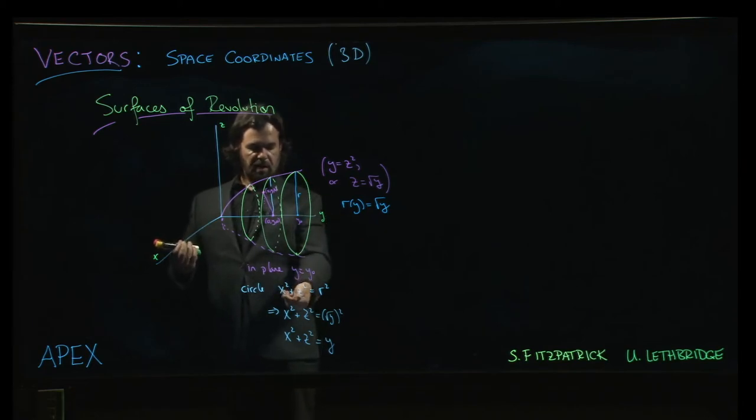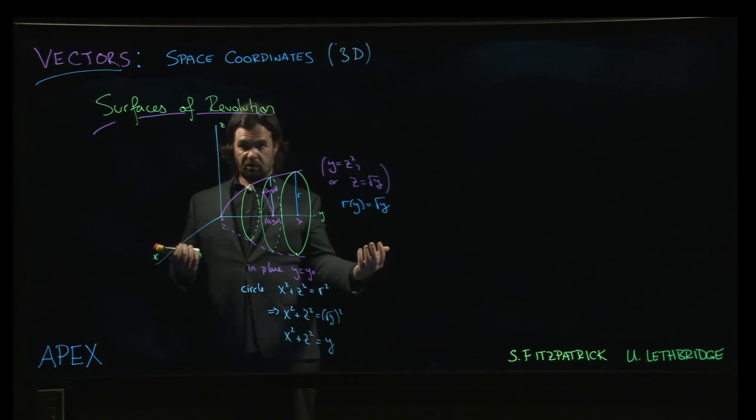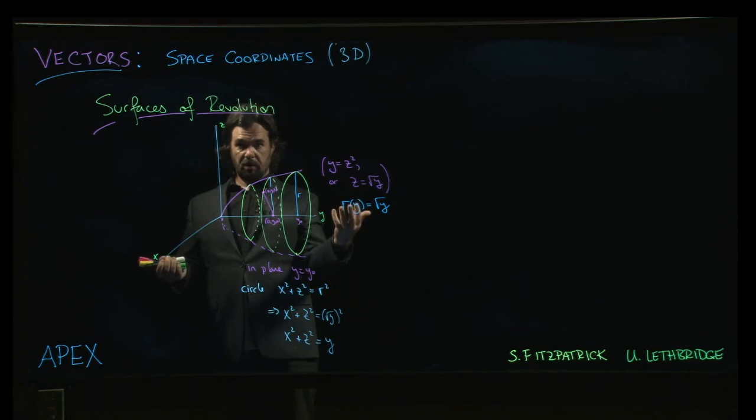You'll have two of them on the other side given in terms of a radius that's expressed as a function of the remaining variable. And that function, of course, comes from the function used to define the curve that you're revolving around the axis.